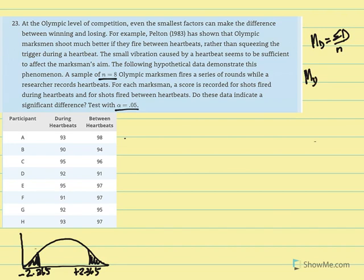And we need to calculate our d values. Again, d is equal to x2 minus x1. So the between heartbeats will be considered x2. During is x1. So our d is calculated by calculating the difference.